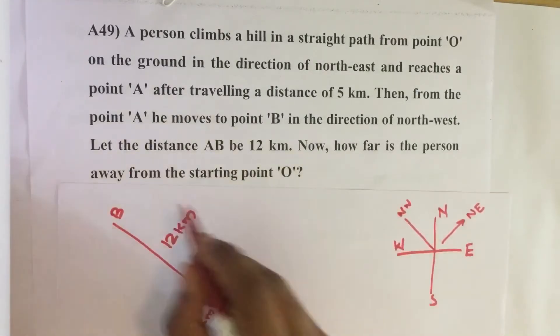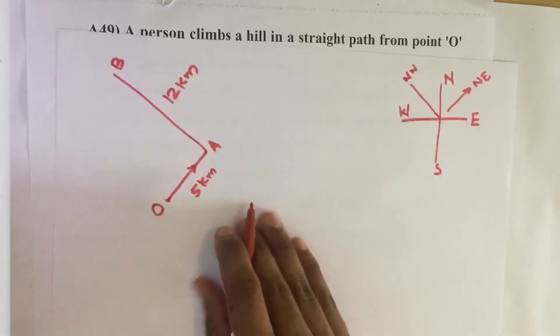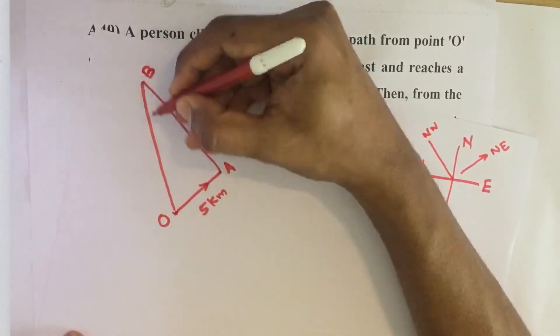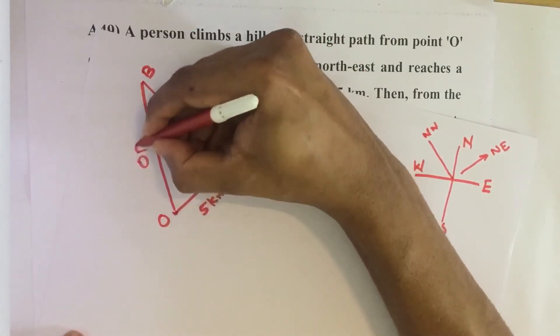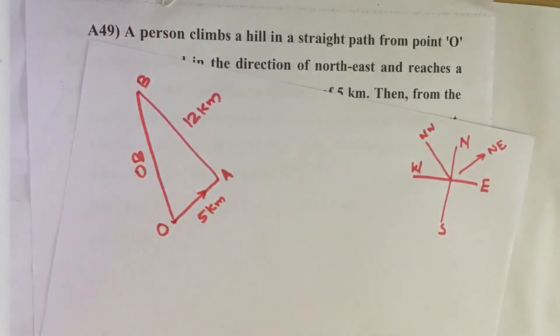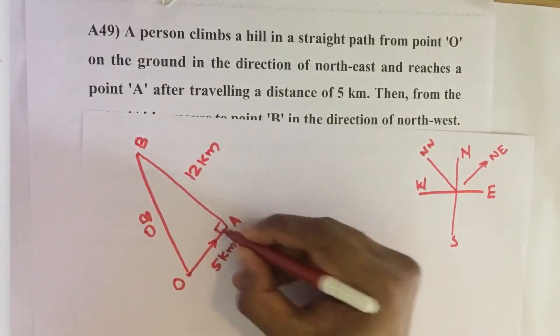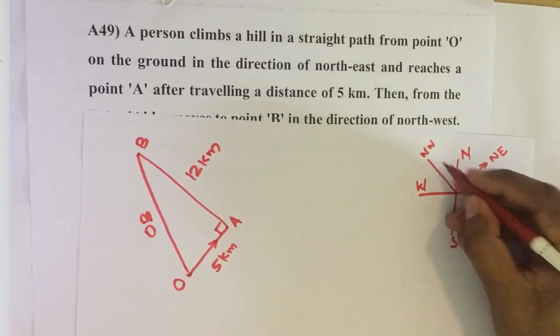Then how far is the person away from the starting point? Starting point O. So we have to find this distance. Distance OB we have to find. So this is 90 degree angle, northeast and northwest.